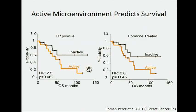Interestingly, these subtypes appeared to predict prognosis in ER-positive tumors. It's very difficult to predict late survival outcomes for ER-positive tumors, and our thought was that perhaps something about the way the microenvironment responds to the tumor might give us some clues to understand the progression of those ER-positive tumors.